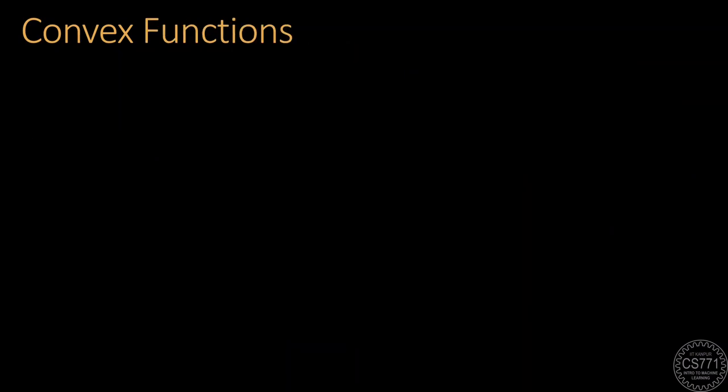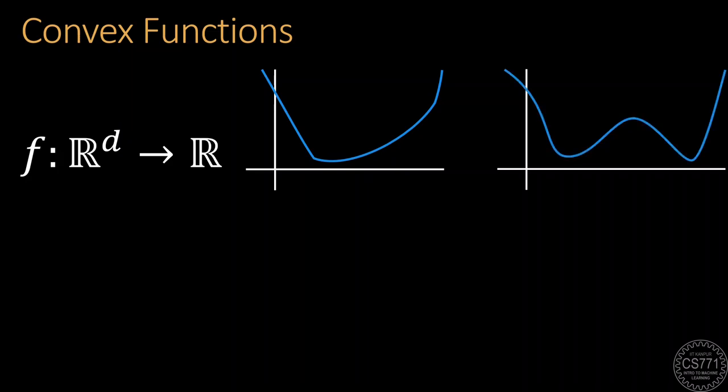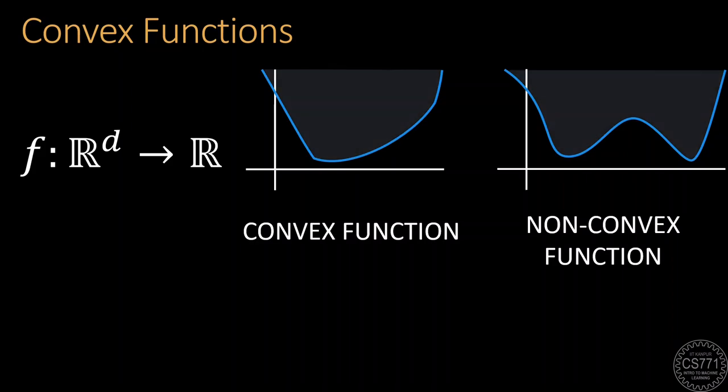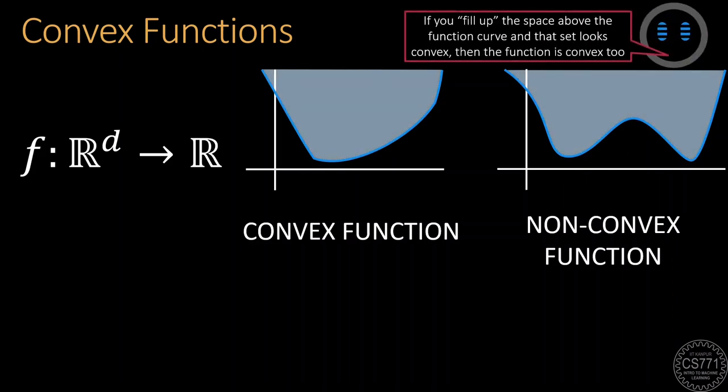From convex shapes, we now move on to convex functions. Here are two functions, one of which is convex and the other non-convex. Pause this video and see if you can guess which one is which. If you guessed that the left one is convex and the right one is non-convex, then you are correct. A function is called convex if the region found out by filling up the space above the function curve is convex. This definition holds true in 2D as well as higher dimensions.